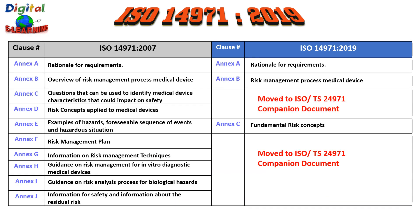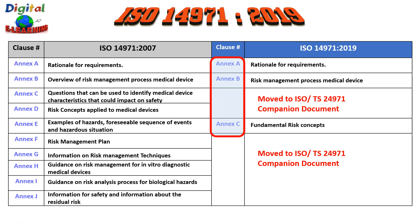As far as the annexes are concerned, the previous revision contained annexes A through J. Seven of them have been moved to the new companion document, ISO TS 24971. The annexes that remain cover the rationale for requirements, an overview of the risk management process for medical devices, and fundamental risk concepts. This makes the companion document a key reference alongside ISO 14971.